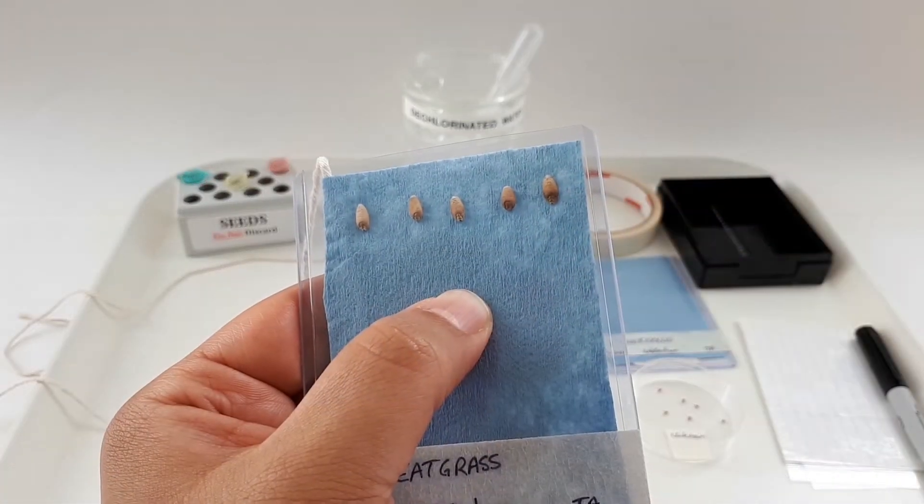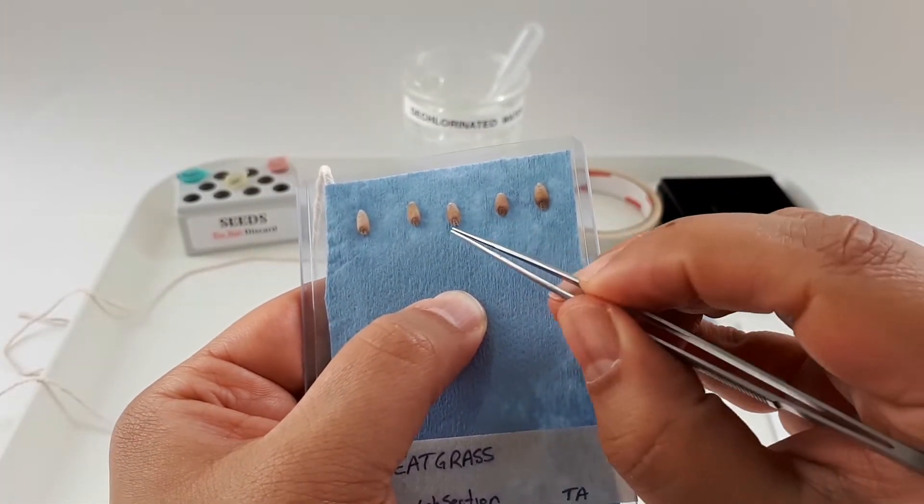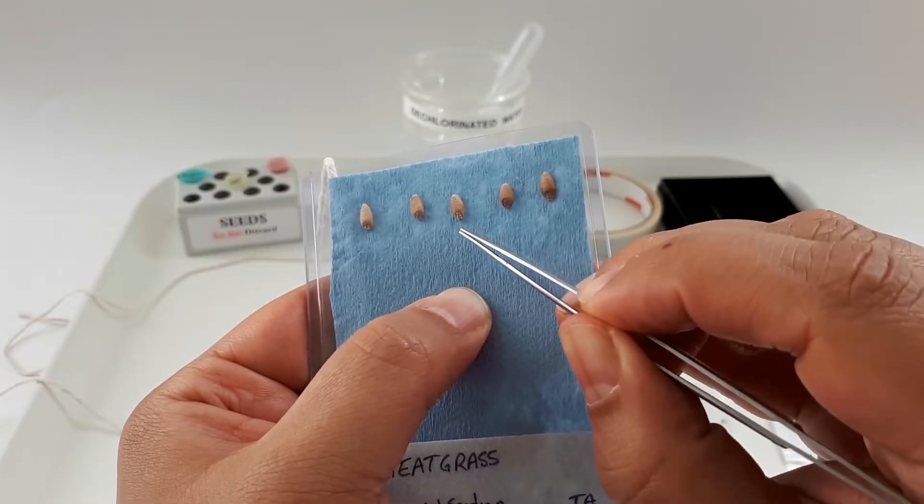For the wheatgrass seeds, make sure that the little knob on the bottom that houses the dormant embryo is pointing downwards.